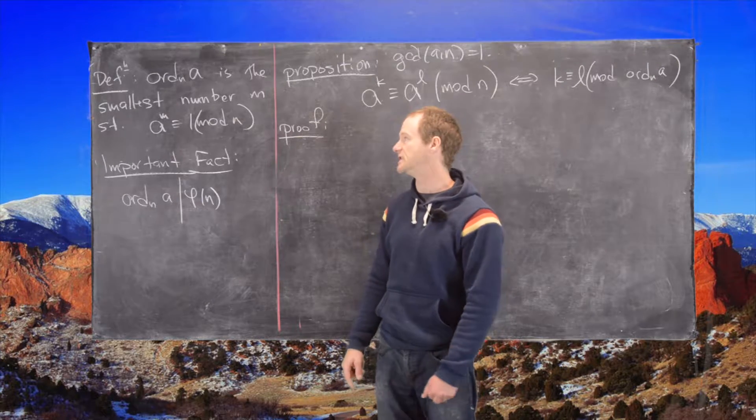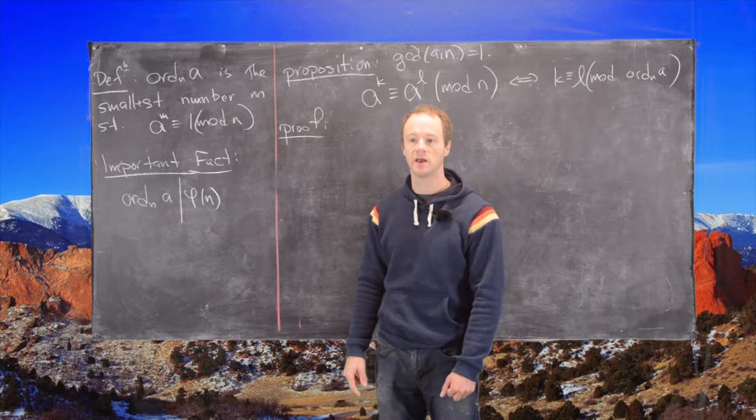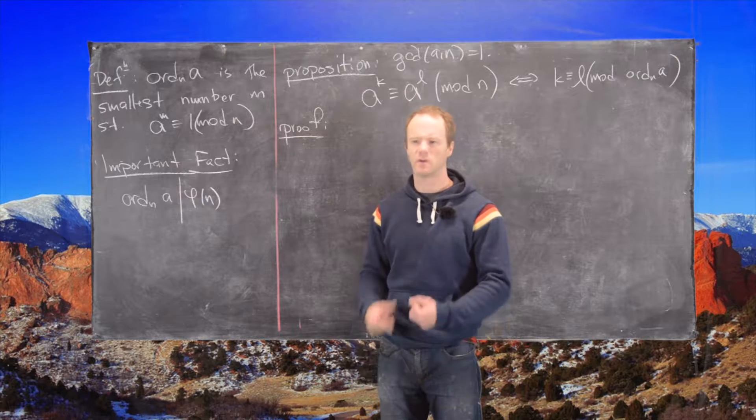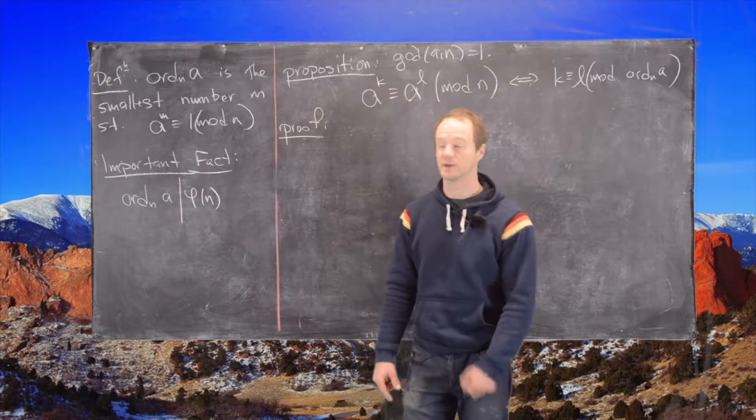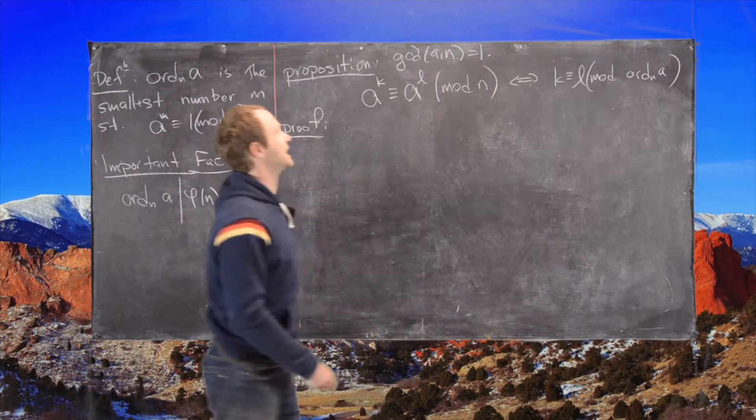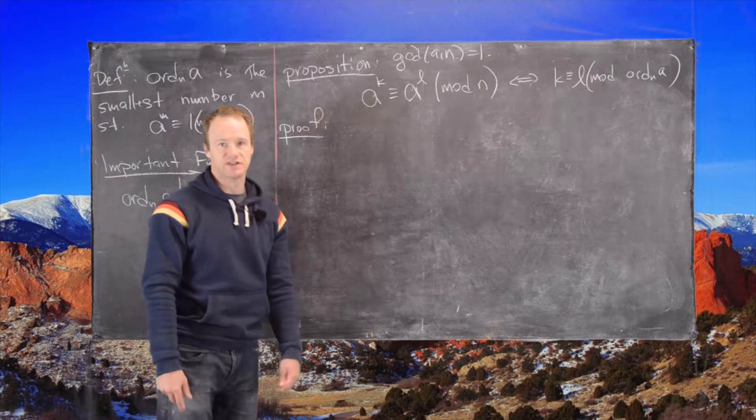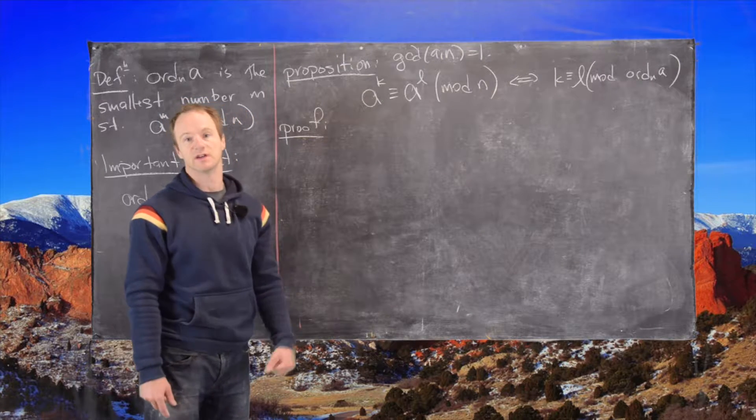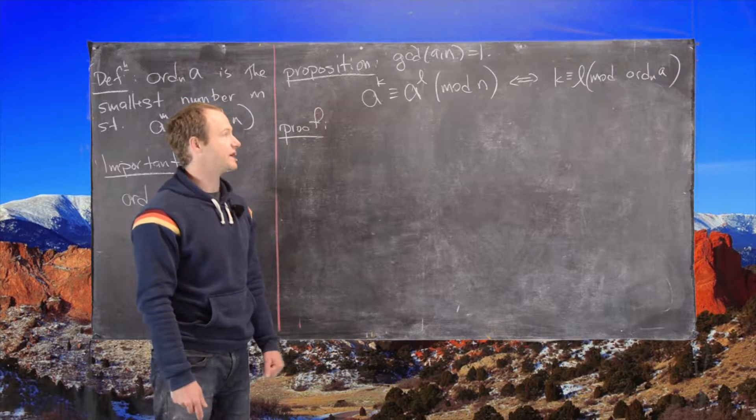So we generally take the GCD of a and n to be 1, but if the GCD is not 1 we could say the order was infinite because we'd never get back to 1. But in this case we will focus on the case and only the case when the GCD of a and n is 1, which is what we've been doing in general.